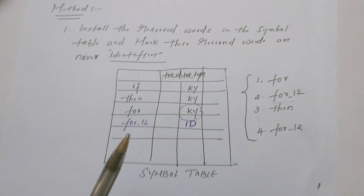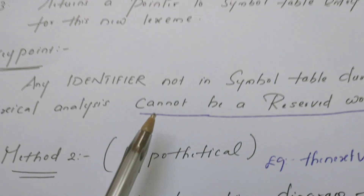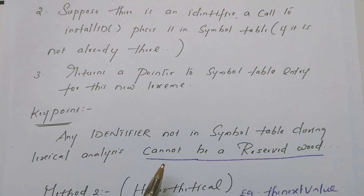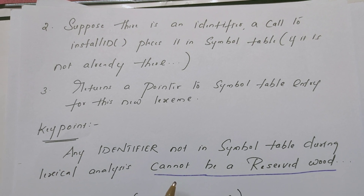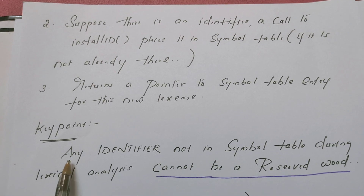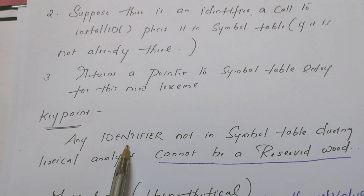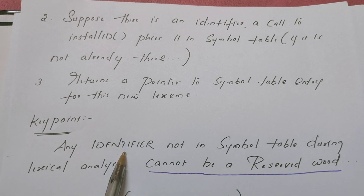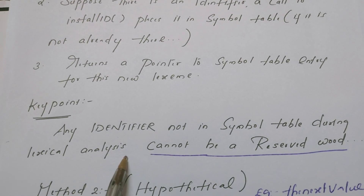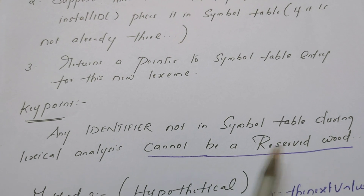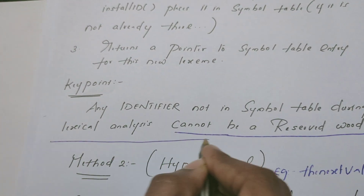This is method one. The key point is: all reserved words are already made available in the symbol table. If a keyword comes, it returns the token type as keyword; otherwise, it returns it as an identifier. Any lexeme recognized by the transition diagram that is not already in the symbol table during lexical analysis cannot be a reserved word — it is tagged as an identifier.